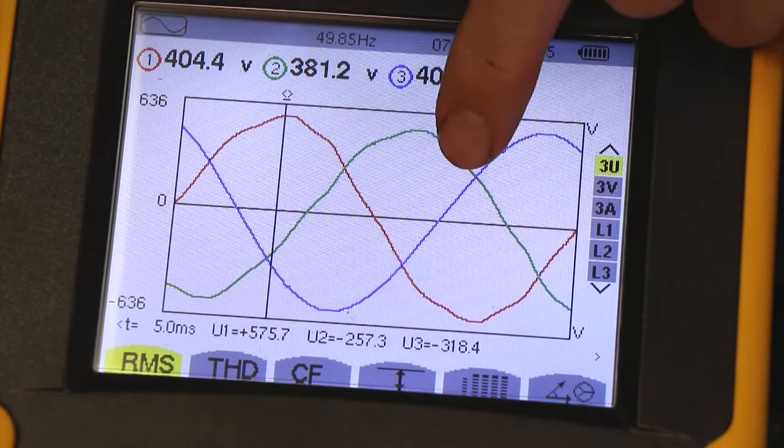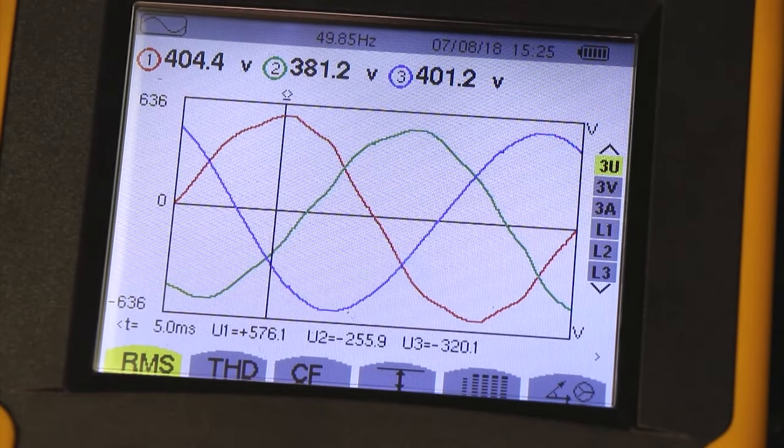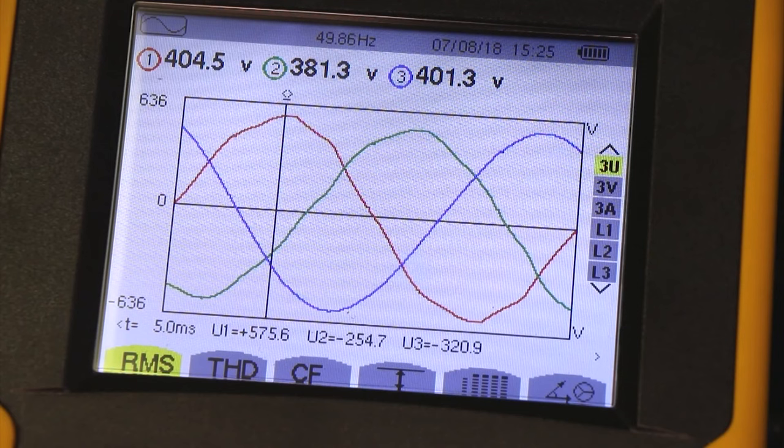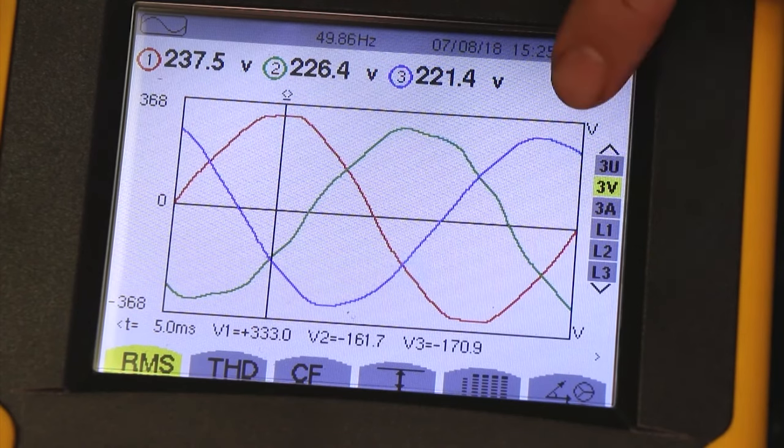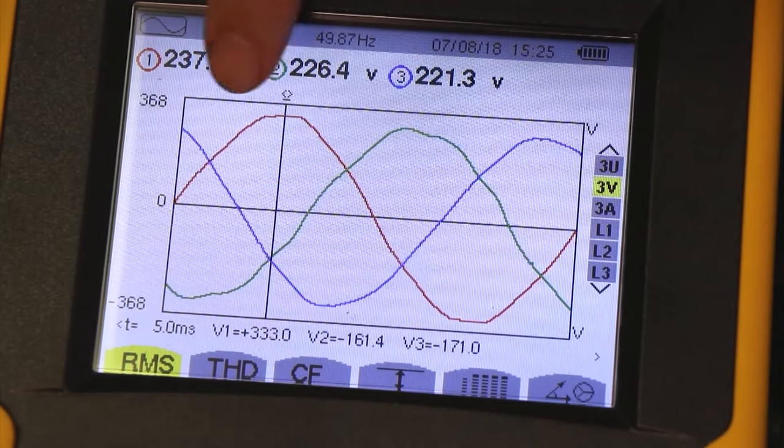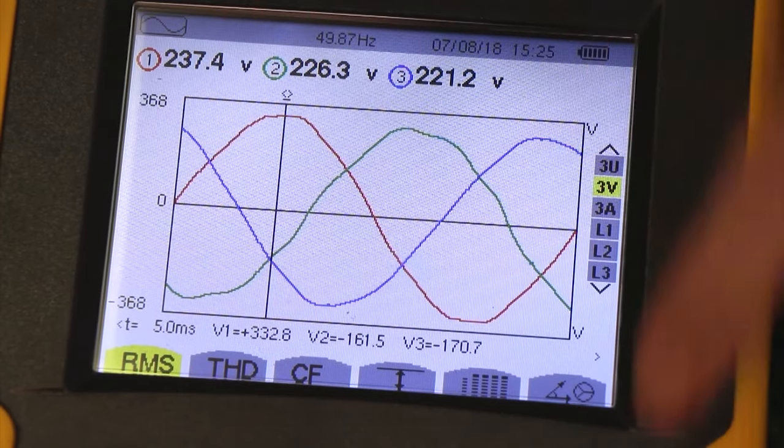At the moment, three phase-to-phase voltages. If I push down on the cursor, now you're looking at three phase-to-neutral voltages. Press down again, and you're looking at three different currents, and so on.